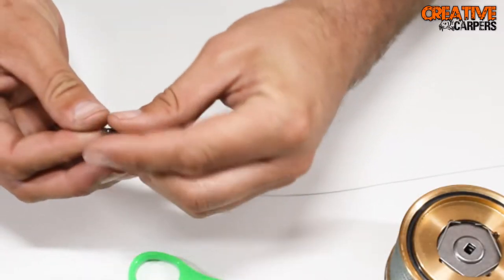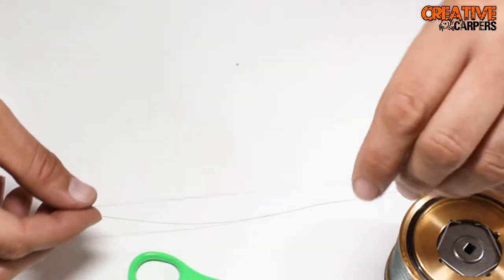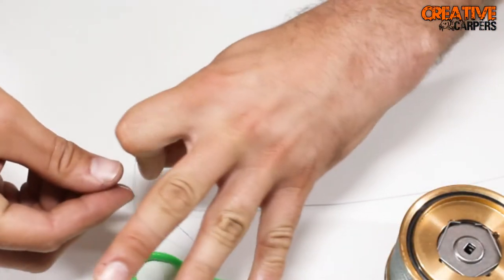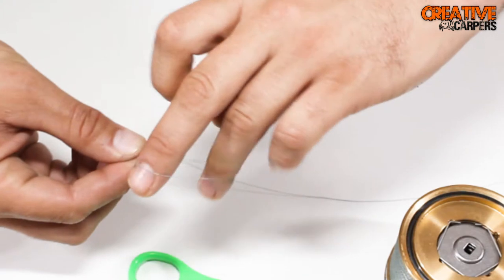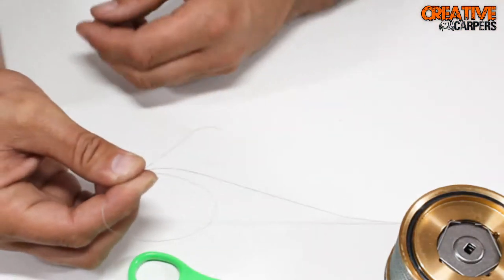Thread the tag end through the eye of the swivel and then form yourself a loop. Clamp that between your thumb and your finger so you end up with something that looks a little bit like that.